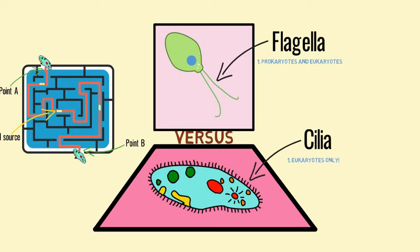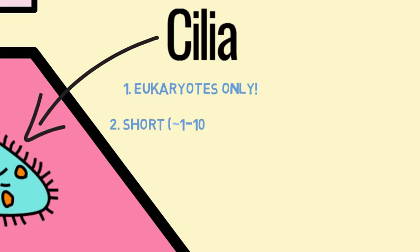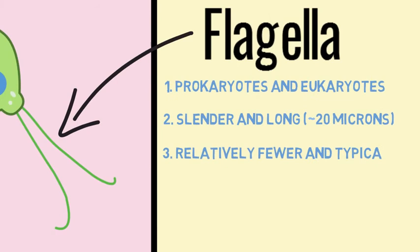What is the difference between cilia and flagella? The most obvious difference is in their lengths. Flagella are typically slender with an average length of 20 micrometers, and cilia are short with lengths between 1 and 10 micrometers.